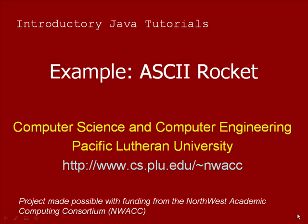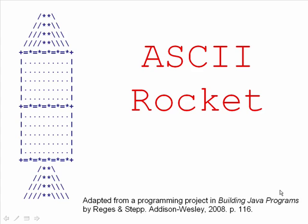In this example, I'm going to demonstrate how to write nested for loops and also how to take a larger problem and decompose it into smaller pieces using nested loops. We're going to be writing a program to draw an ASCII rocket ship made out of ASCII characters. You'll notice that there is some repetition in the various patterns, so we'll be able to reuse the code that we've written to draw the different parts of the rocket.